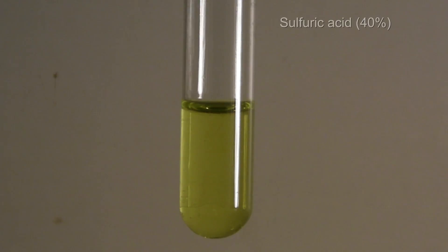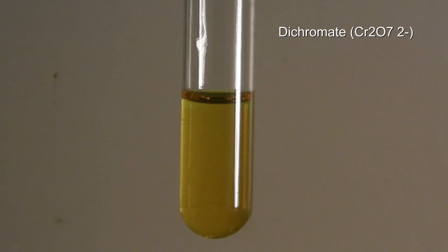Next, the solution is acidified by adding 40% sulfuric acid. The orange dichromate is formed.